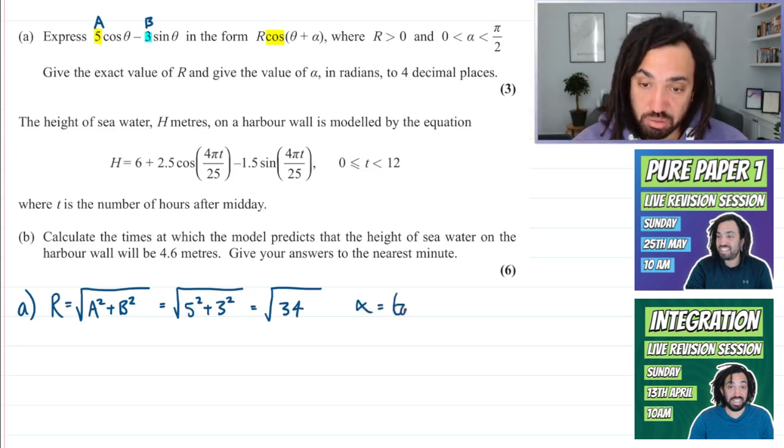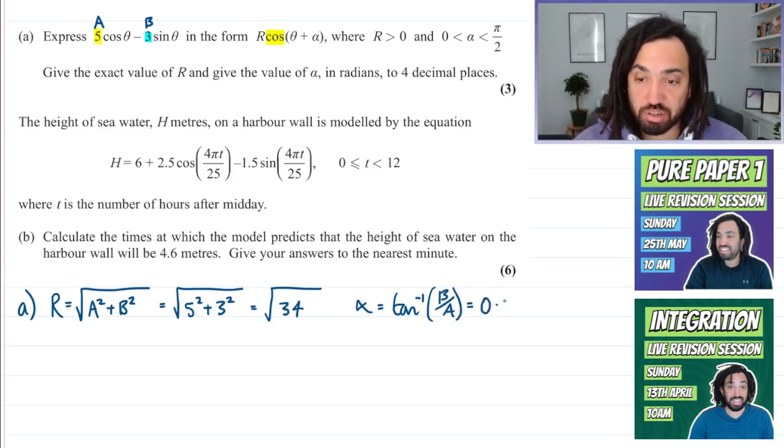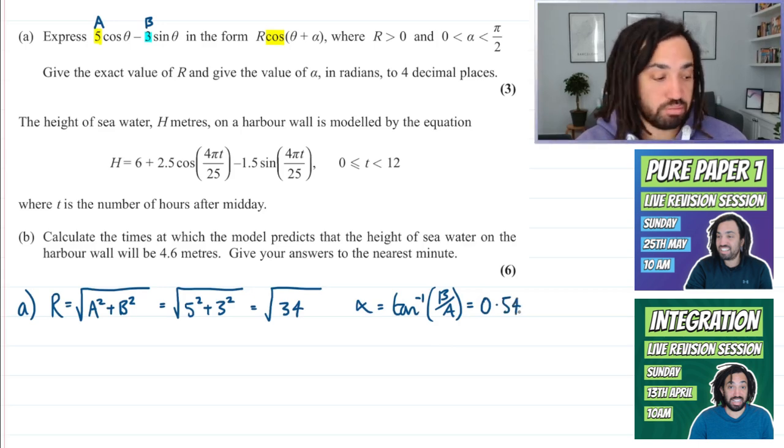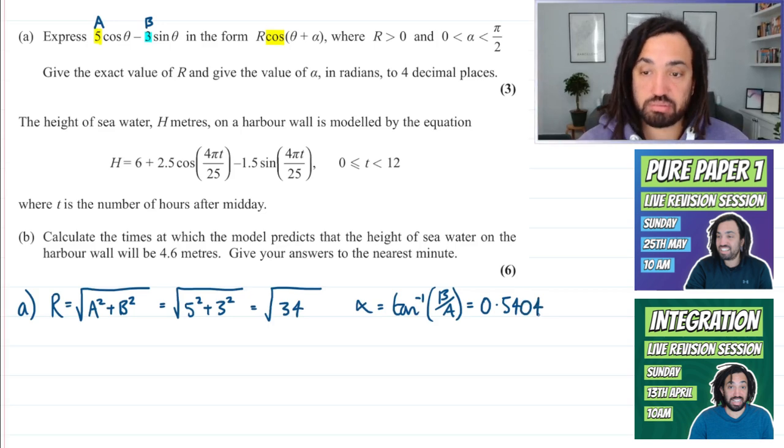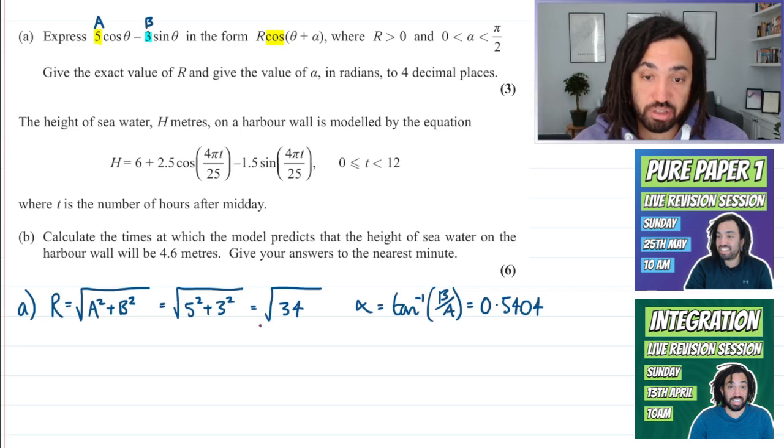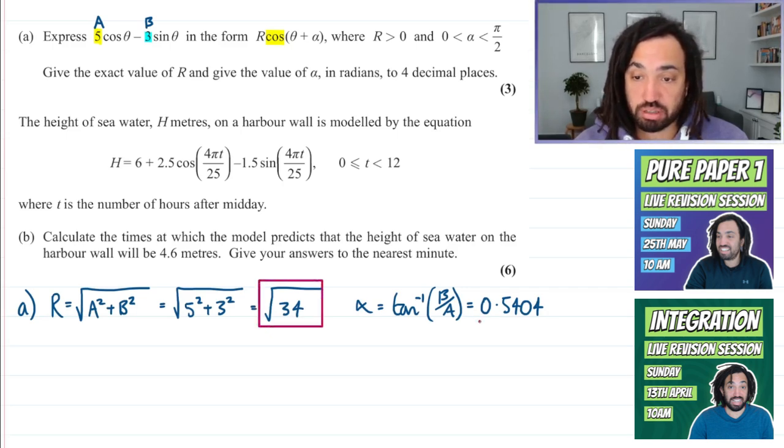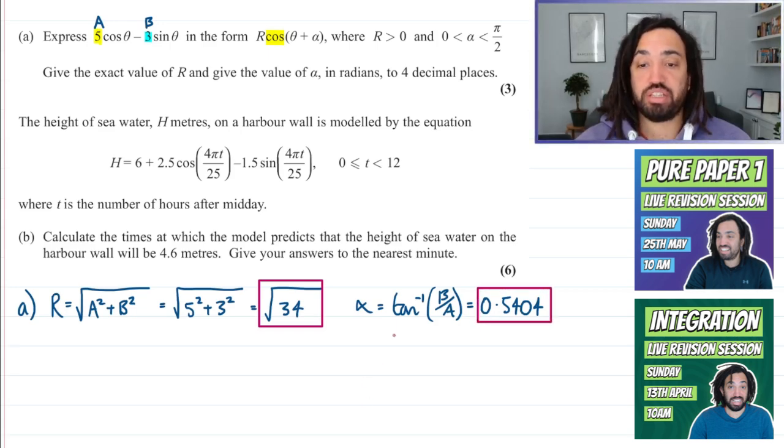Alpha is always equal to tan to the minus 1 of b over a, so in this case we just put this into our calculator and we get 0.5404. If you know this method, it generally can be the easiest free marks on your whole paper. Those are the two values we need to show.